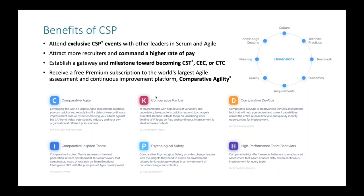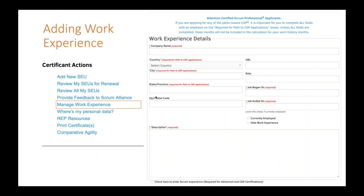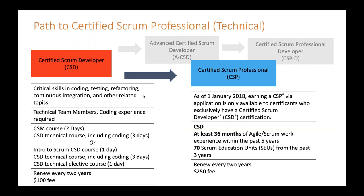For the Advanced CSM, Advanced CSPO, and CSPS for both tracks, you have to submit a brief description of recent work experience in that role. Looking at a screenshot: you enter logistical information at the top, write a few paragraphs in the description, check a box at the bottom, and submit. That's how you complete the work experience requirement for any of the advanced classes beyond the foundational ones. The trainer dashboard looks a little different from the student view but is essentially a superset of what students see.